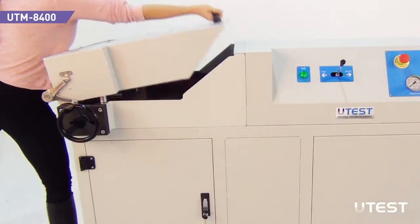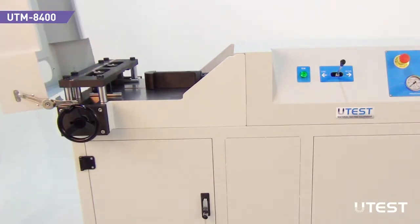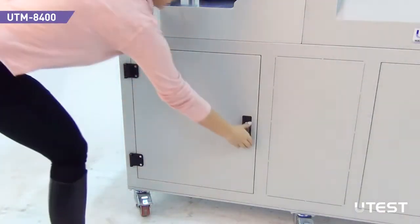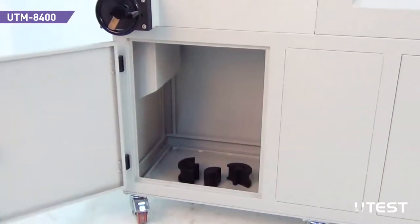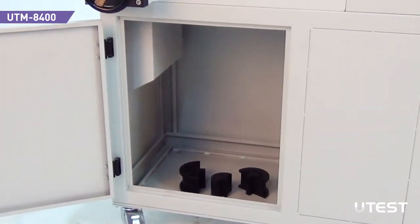The machine has a protection lid over the test space. There is a cabinet at the lower part of the machine to serve as a storage section for the accessories, specimens, etc.